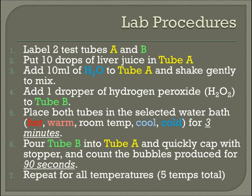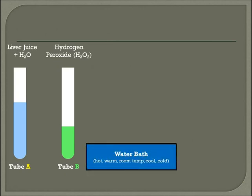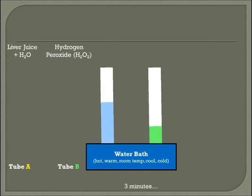You're then going to repeat this for all the different temperatures, with 5 temperatures in total. Here I have tube A, which is liver juice and water, and tube B with one dropper full of hydrogen peroxide. I'm going to take them and put them in my water bath — 5 different temperatures: hot, warm, room temp, cool, and cold — and shake gently for 3 minutes.